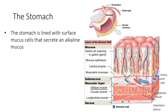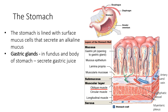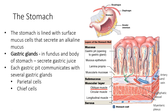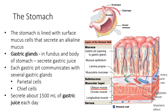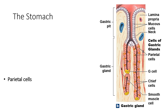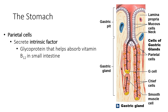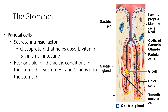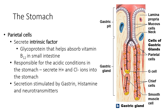The stomach is lined with surface mucus cells that secrete an alkaline mucus. Gastric glands in the fundus and body of the stomach secrete gastric juice. Each gastric pit communicates with several gastric glands, which contain parietal cells and chief cells, secreting about 1,500 millilitres of gastric juice each day. The parietal cells secrete intrinsic factor — a glycoprotein that helps absorb vitamin B12 in the small intestine — and are responsible for the acidic conditions in the stomach by secreting hydrogen ions and chloride ions. Secretion is stimulated by gastrin, histamine and neurotransmitters.